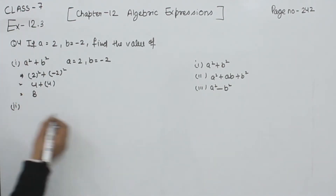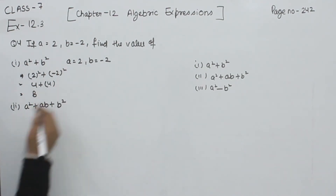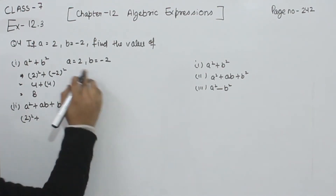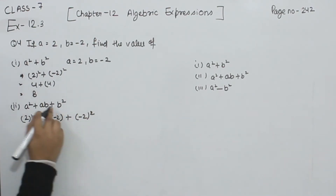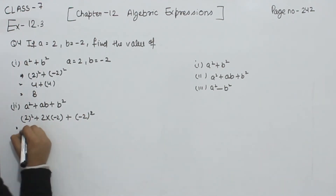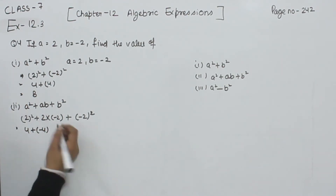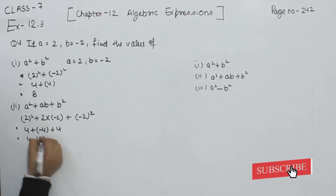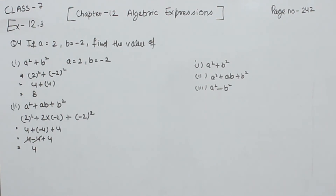Now, coming to part 2: A square plus AB plus B square. A is equal to 2, so we have 2 squared, which is 4. Then A multiplied by B is 2 multiplied by minus 2, which gives minus 4. And B square is minus 2 squared, which is 4. So 4 minus 4 plus 4, the middle terms cancel, giving the value for part 2 as 4.